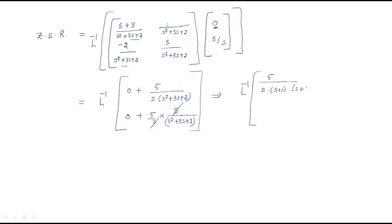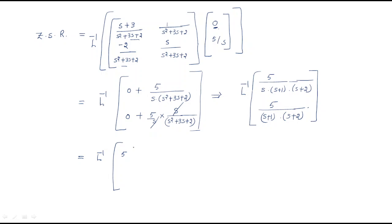The second element gives 5·s / [s·(s+1)·(s+2)], where the s cancels, leaving 5 / [(s+1)·(s+2)]. We apply partial fractions to both expressions. After partial fractions, the first expression gives 5/2·(1/s) - 3/(s+1) + 3/2·(1/(s+2)).